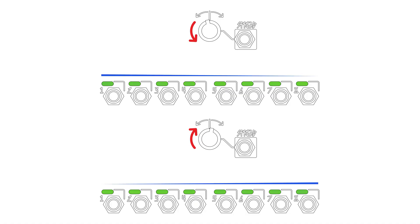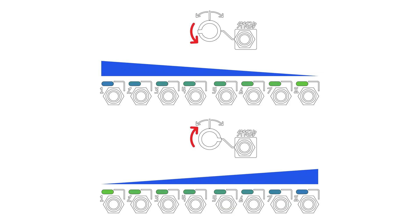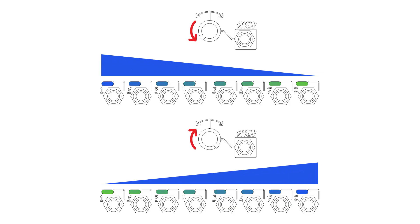Turning spread clockwise from noon shifts this modulation to affect the rightmost channels more than the leftmost channels, and setting spread counterclockwise affects the leftmost channels more than the rightmost channels.